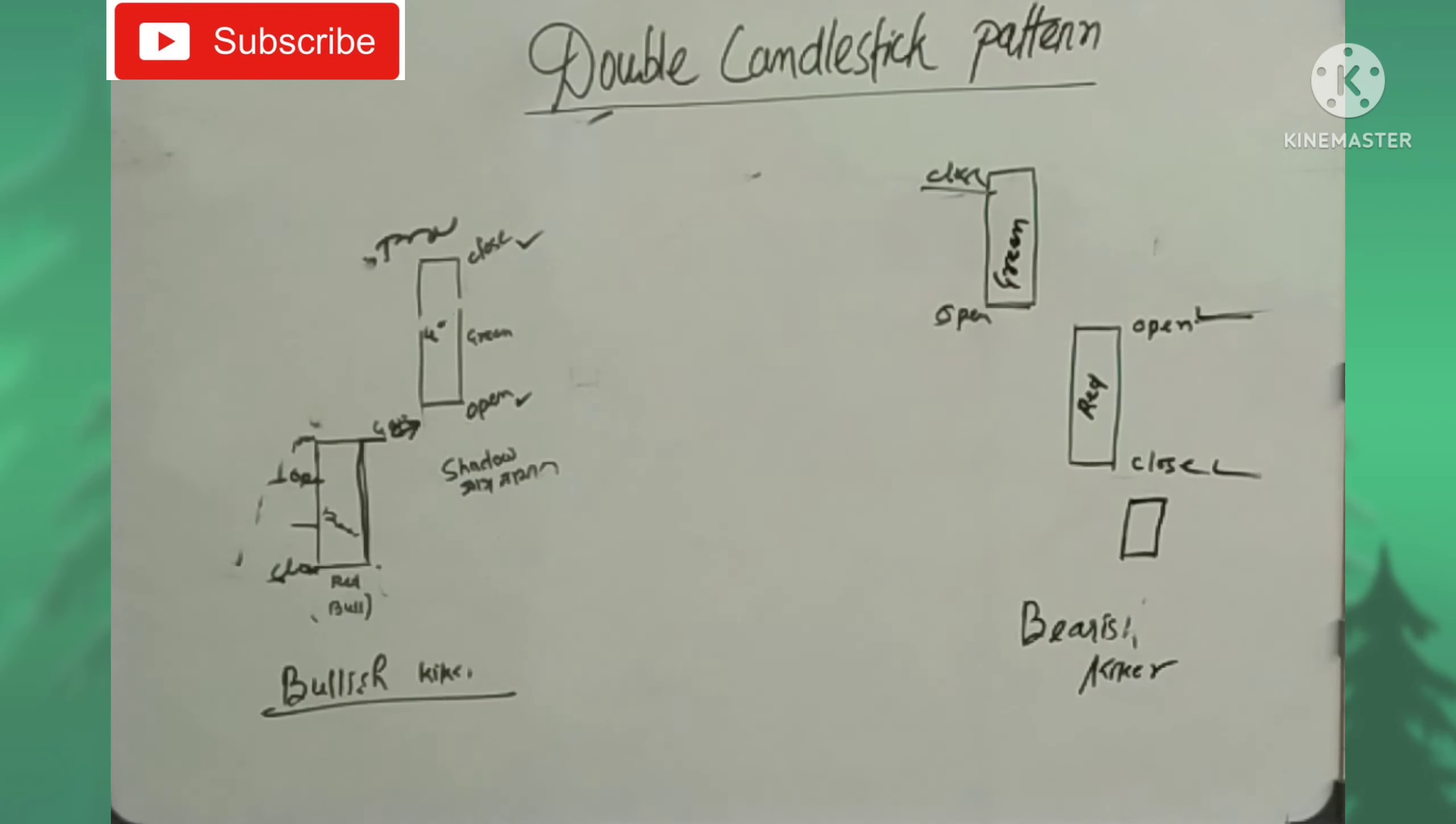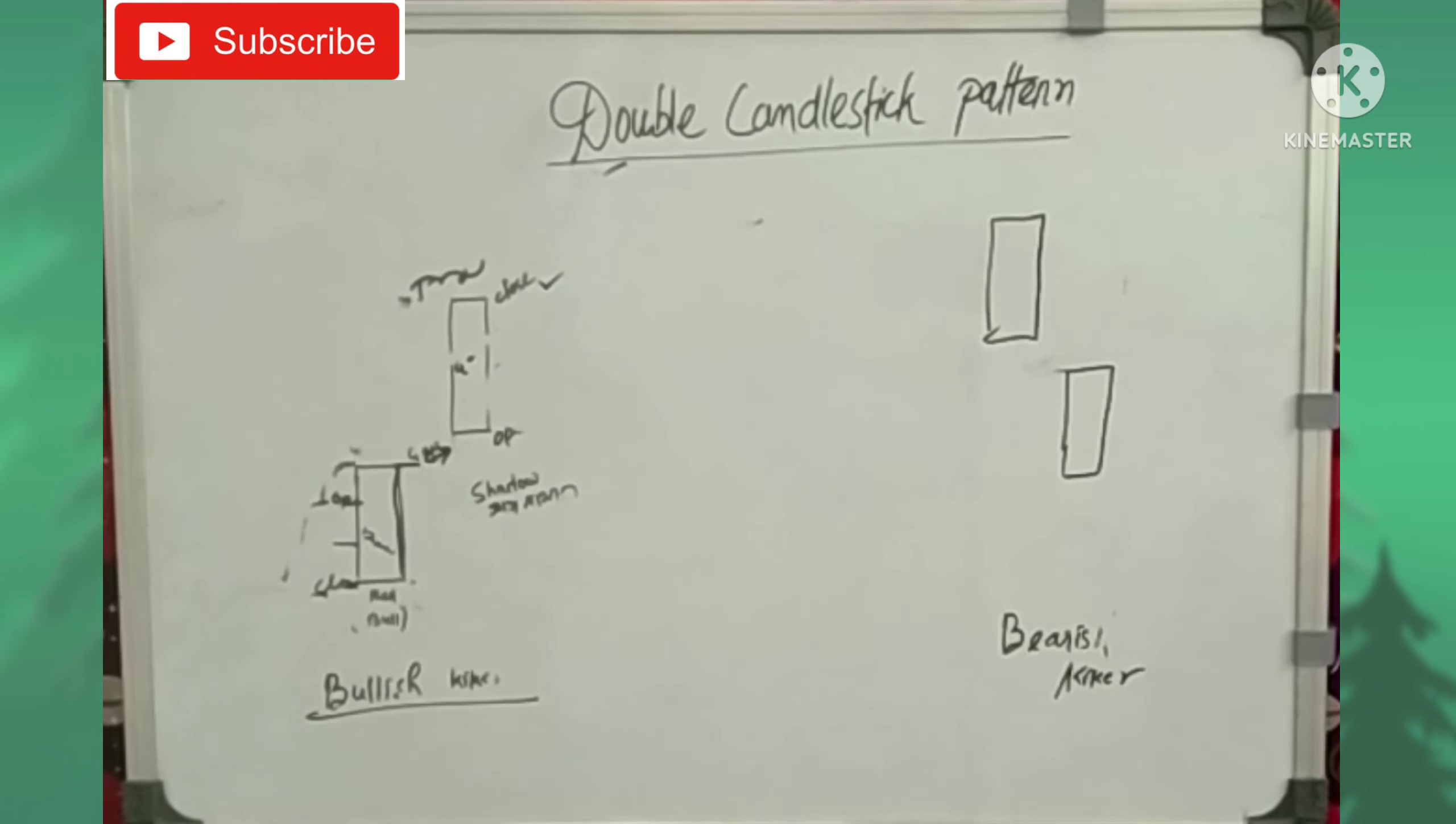This is called the bullish kicker or bearish kicker pattern. The bullish kicker starts at the bottom and signals a reversal. We wait for the next candle - if it's green, we get confirmation to trade the reversal.